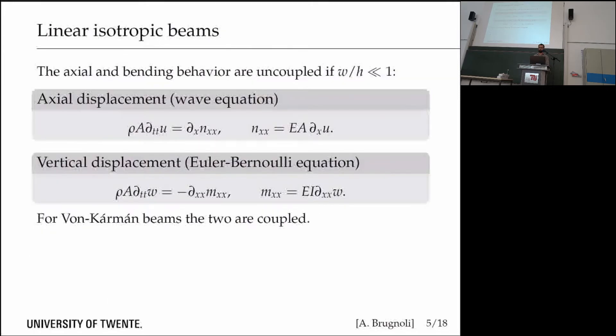You are probably more familiar with linear isotropic beams, especially in the Port-Hamiltonian framework. You can describe the axial displacement by a wave equation. In this case I just consider a linear isotropic beam. Nothing changes if you need to consider an anisotropic material, for example composite materials used in aerospace applications.